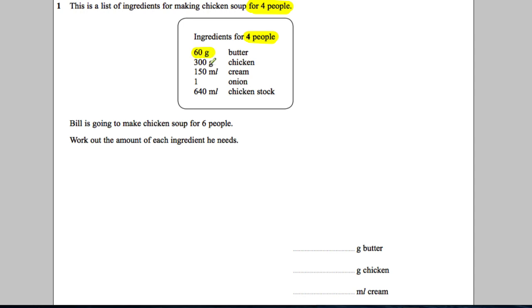So the ingredients for four people are 60 grams of butter, 300 grams of chicken, 150 millilitres of cream, 1 onion, and 640 millilitres of chicken stock.